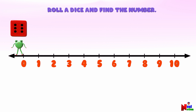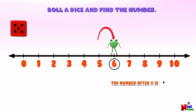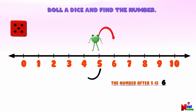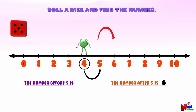One more time! The dice shows the number five. You are right — can you locate number five on the number line? There you go. Now can you find the number that comes after number five? Six! The number after five is six. Now can you find the number that comes before number five? Four — you are right!